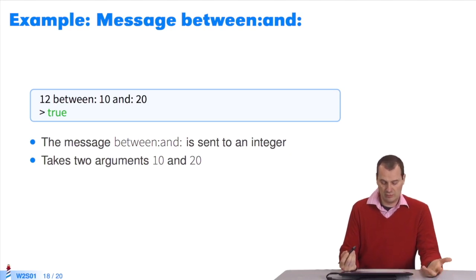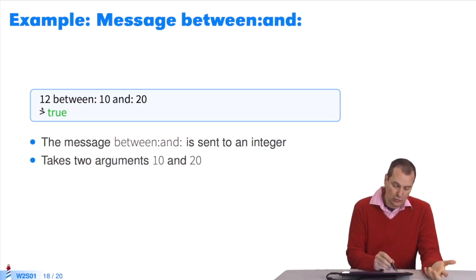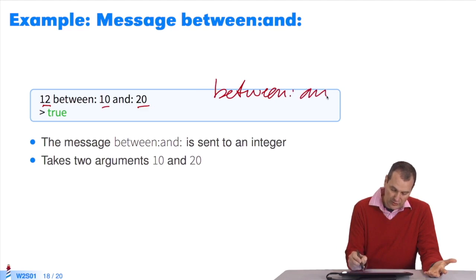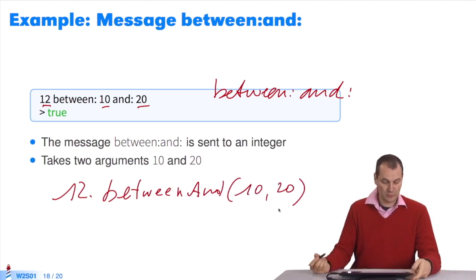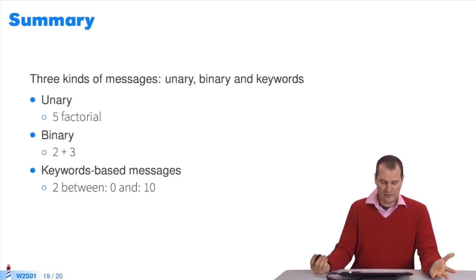I'll give another example of keyword messages. When I ask whether 12, which is an integer, is between 10 and 20, it's the message between and. In the syntax, it would be the same as 12 between and 10 20. I think I've focused on this enough. There are three types of messages: unary, binary, and keywords.